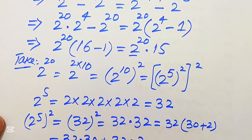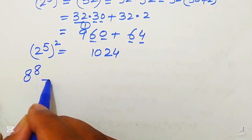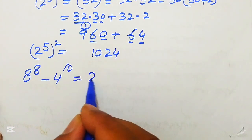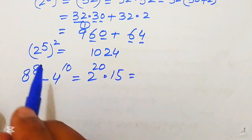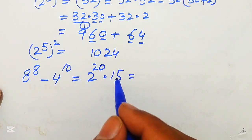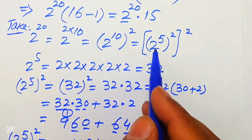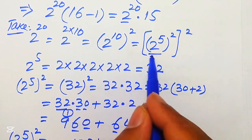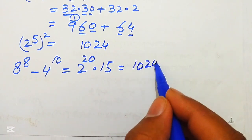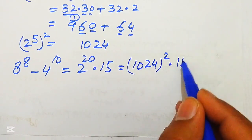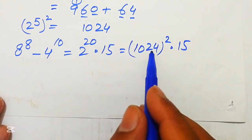We substitute 2 to the power of 20 equals 1024 squared. Our expression 8 to the power of 8 minus 4 to the power of 10 equals 2 to the power of 20 multiplied by 15 is now written as 1024 squared multiplied by 15.